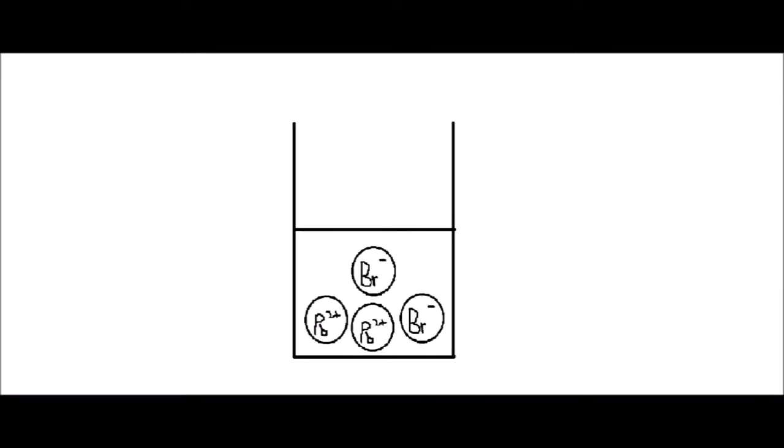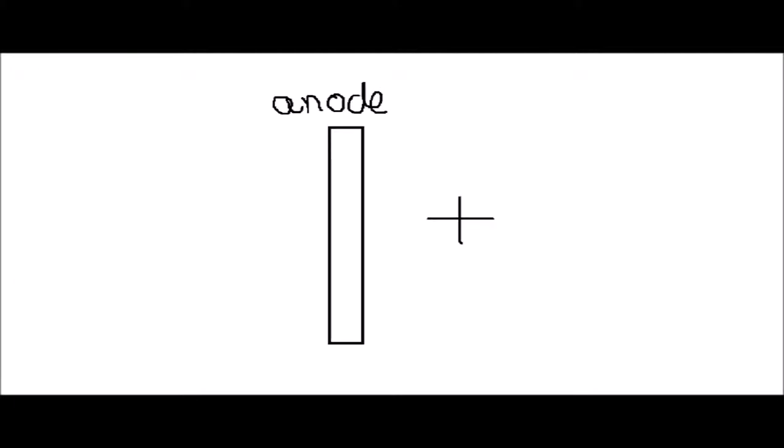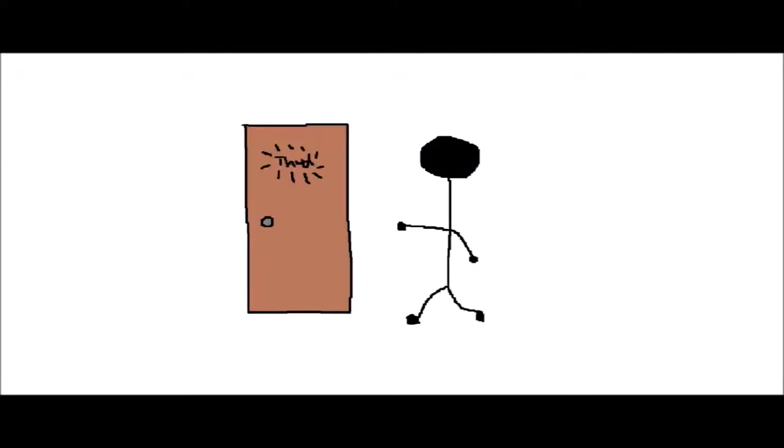In order to carry out the electrolysis of molten lead bromide, we need to have molten lead bromide as an electrolyte. We also need to have two inert electrodes as our anode and cathode, the anode being the positive electrode and the cathode being the negative electrode. The reason we need the electrodes to be inert is because we don't want them to interfere with the actual chemical process itself.